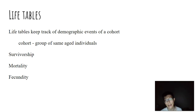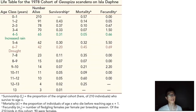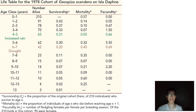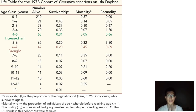We can take all this information and put it into a life table. This is a life table of a species of Darwin's finch on one of the Galapagos Islands. We can keep track of these age classes over time and look at parameters such as survivorship and mortality. Often the life table is already presented for you, and you just need to be able to read and understand it from a general perspective.